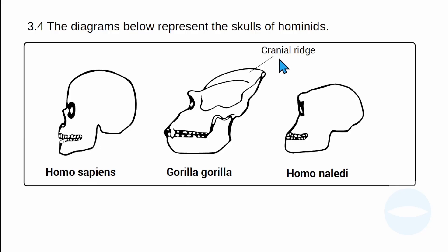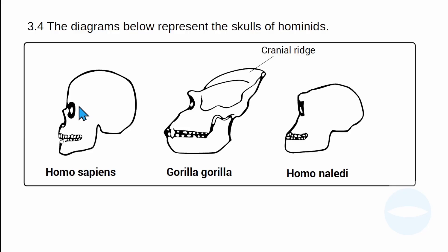We also have cranial ridges. On the gorilla, the cranial ridge is connected to strong muscles that help with chewing hard food. Homo sapiens has small or no cranial ridges because they eat soft food and don't need strong chewing muscles. Homo naledi also has small cranial ridges.